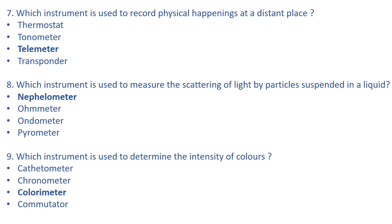Question number seven: which instrument is used to record physical happenings at a distance? The answer is telemeter — it is an instrument that indicates any physical happening around us. The remaining options are thermostat, tonometer, and transponder. Thermostat is used to regulate the temperature at a particular point.